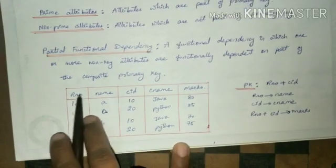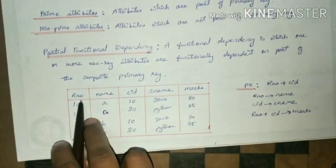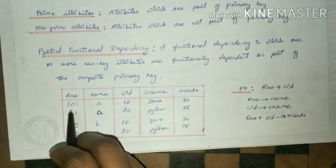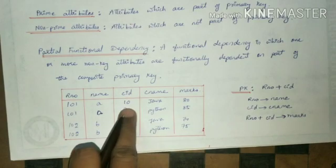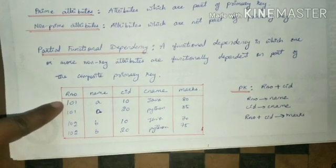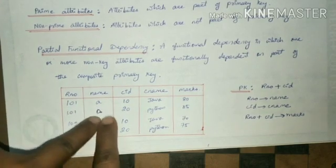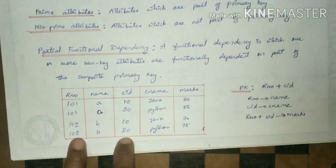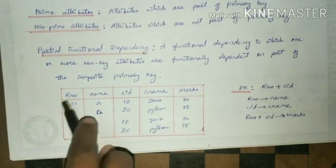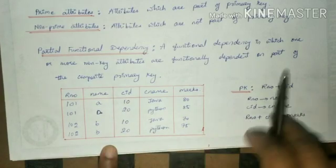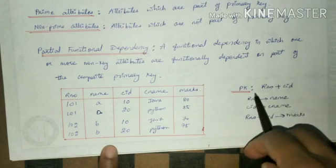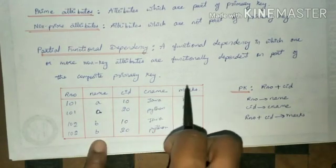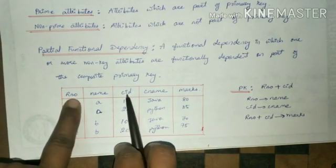Consider this example: a student table with columns roll number, name, course ID, course name, and marks. Roll number and course ID together will become the primary key. Roll number alone can identify a unique record, and course ID alone can identify a unique record, but both can repeat individually — names can repeat, course names and marks can repeat. So roll number plus course ID will become the composite primary key. Name, course name, and marks are the non-key attributes; roll number and course ID are the prime attributes or key attributes.